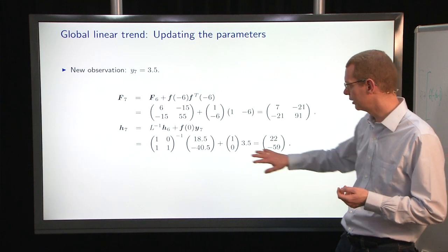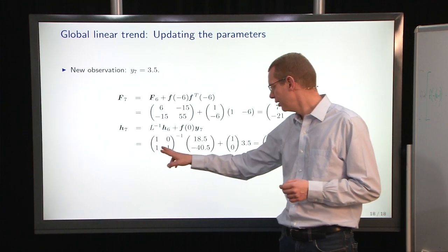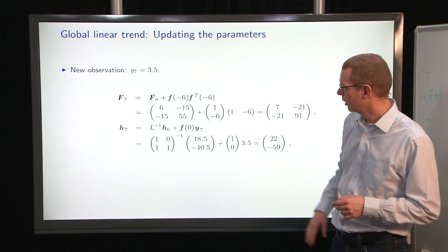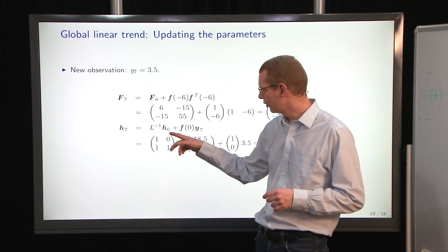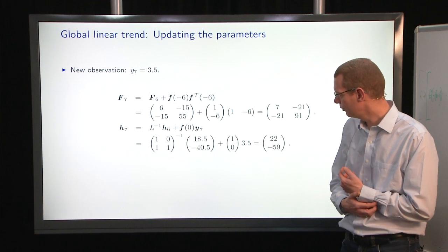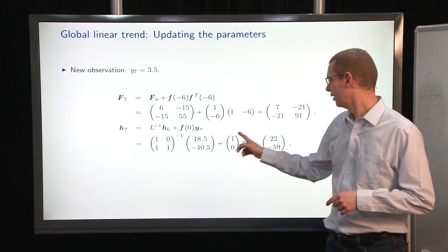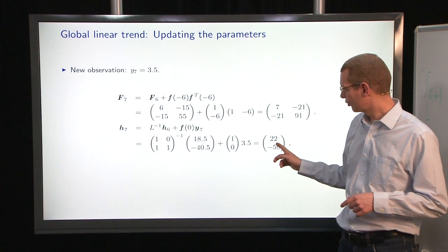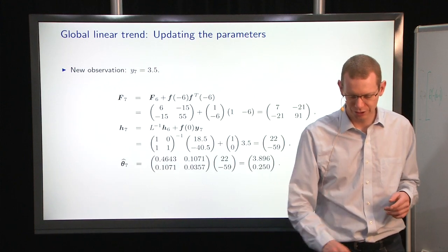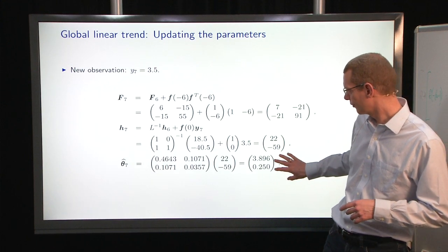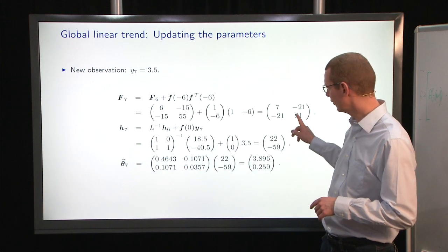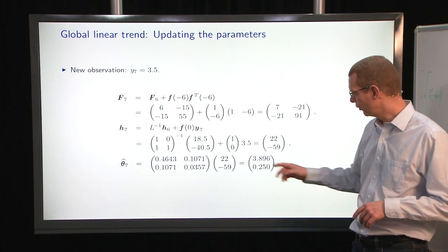Likewise, we can update H here in the following way, and we can precalculate the inverse of F, so we don't have to do that all the time. So we just have to multiply a vector on a matrix and add a vector onto that to get this number. And then we solve this, take the inverse of that to get this, and then we get a new estimate.